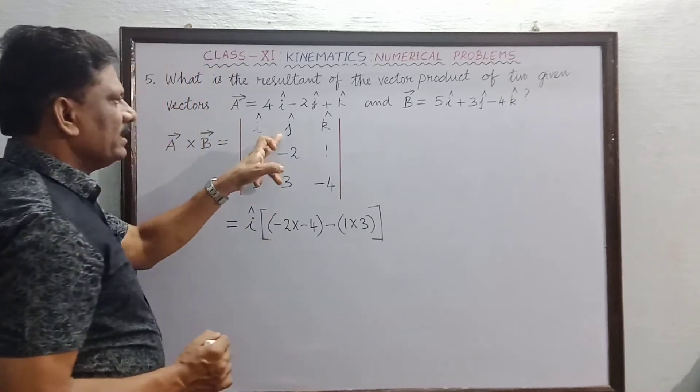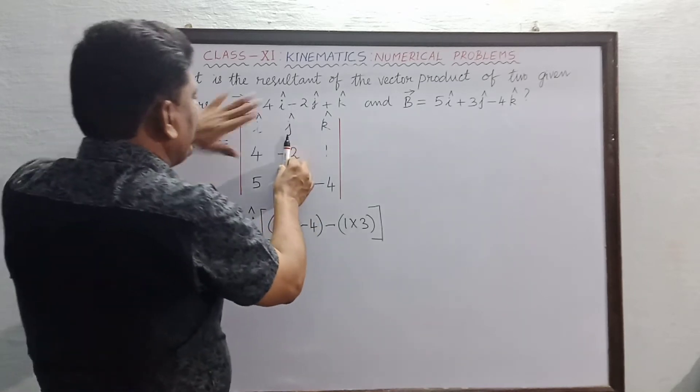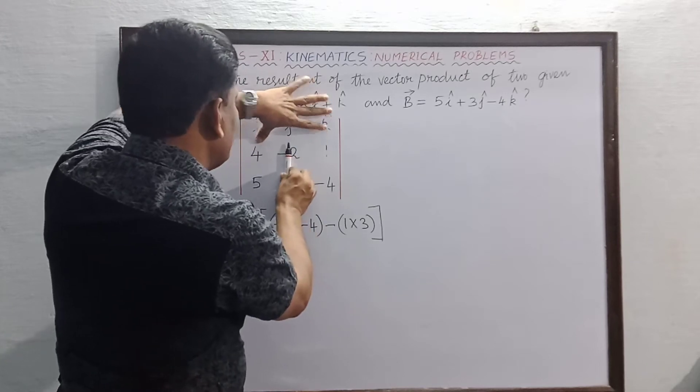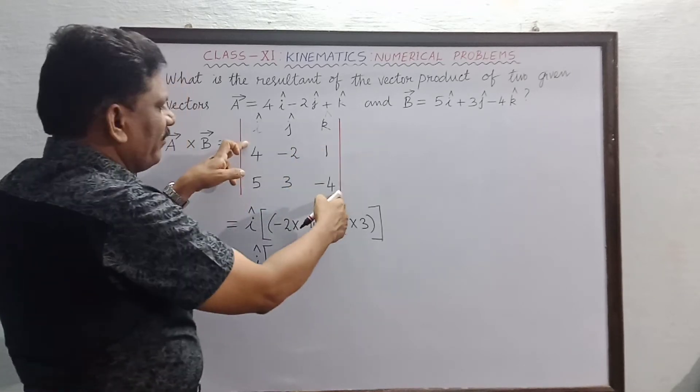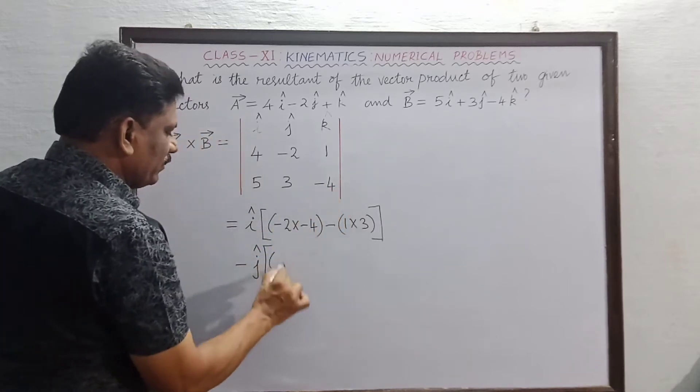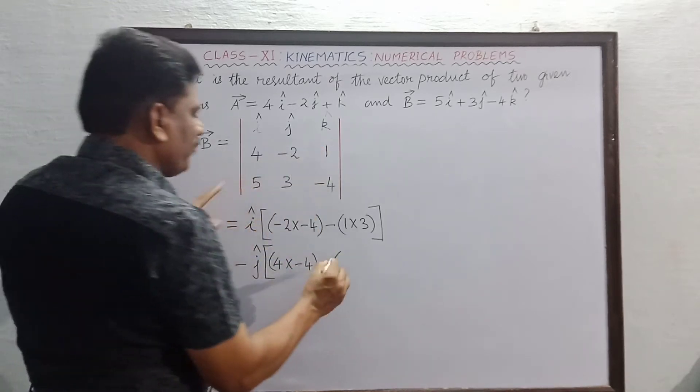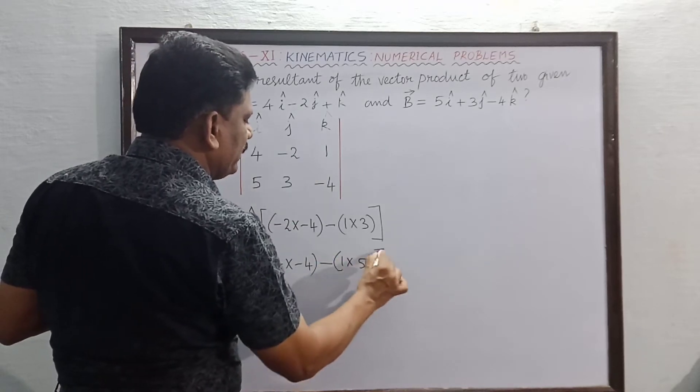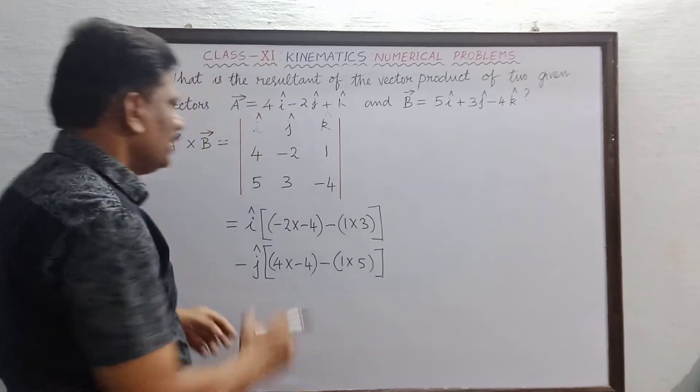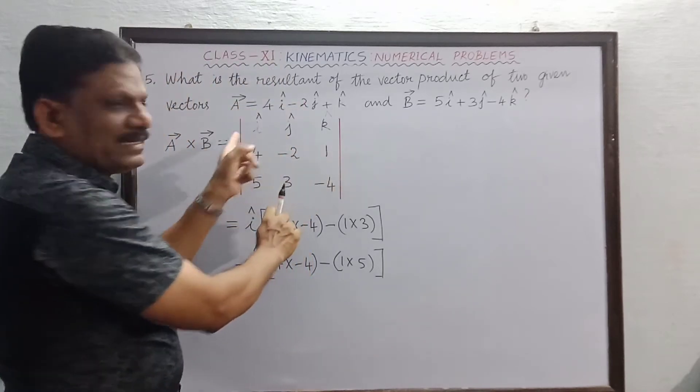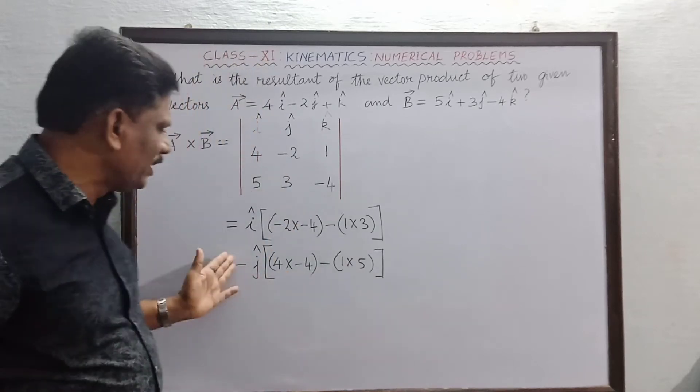Next one, the j cap is equal to minus j cap. We cover j and the elements around j. That means 4 into minus 4, minus 1 into 5. But always keep in mind, left product minus right product, and j cap is negative. That is easy. I cap is positive, j cap is negative.